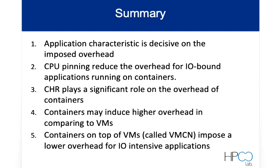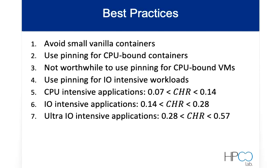We offer a set of best practices. First, avoid small vanilla containers. Make sure to use pinning for CPU-bound containers. It is not worthwhile to use pinning for CPU-bound virtual machines. Use pinning for IO-intensive workloads. For CPU-intensive applications, use a CHR between 0.07 and 0.14. For IO-intensive applications, CHR can be between 0.14 and 0.28. For ultra IO-intensive applications, set CHR between 0.28 and 0.57 to achieve the best performance.